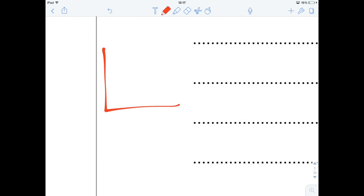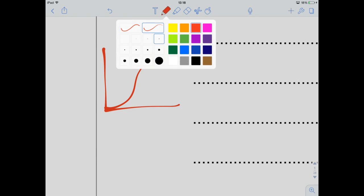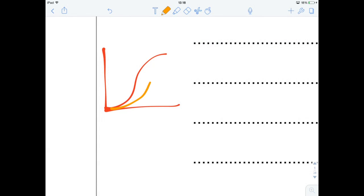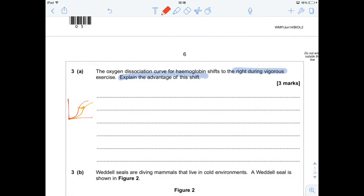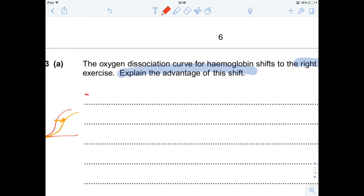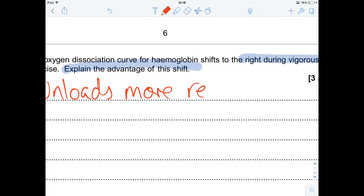So there's my curve, there's normal, and to the right is during exercise. So that's your bore shift. And when we talk about oxygen dissociation curve shifting to the right, we always talk about the advantage being that it's going to unload more readily.